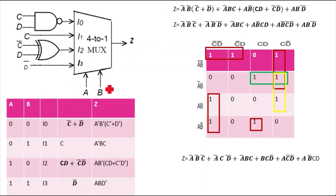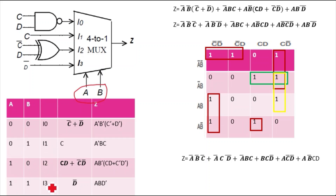A and B are the selection lines. The selection line tells you which input is going to be selected — that is the function of the MUX. When AB = 00, I0 is selected; when AB = 01, I1 is selected; when AB = 10, I2 is selected; and when AB = 11, I3 is selected.